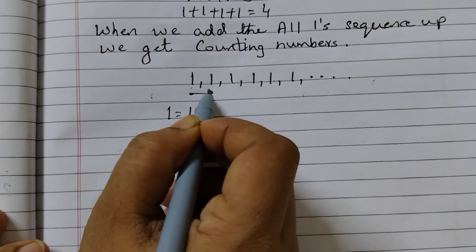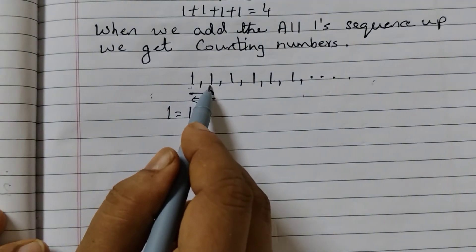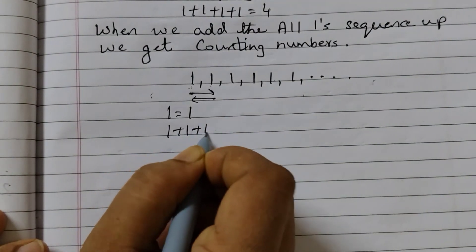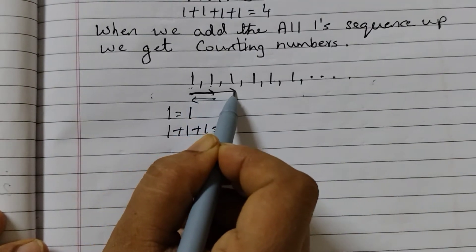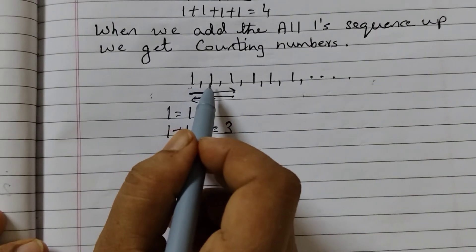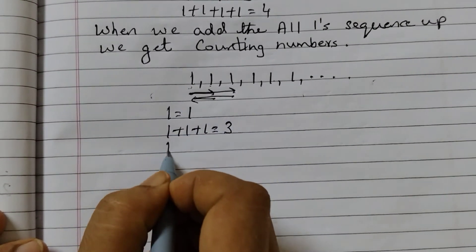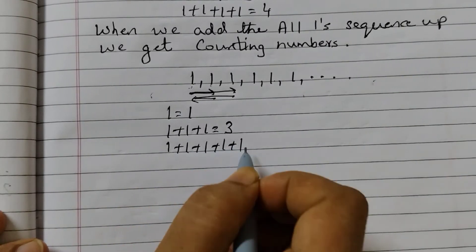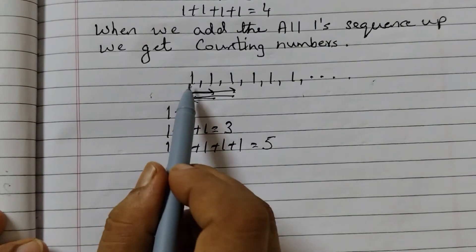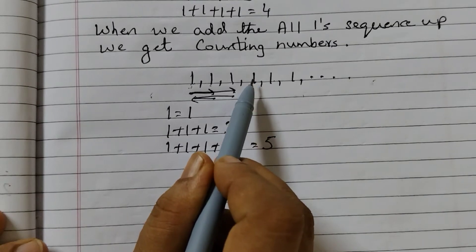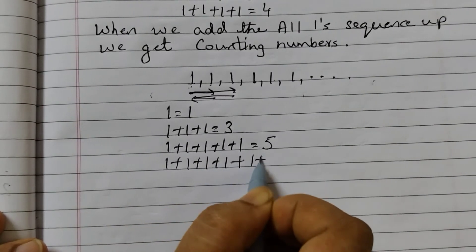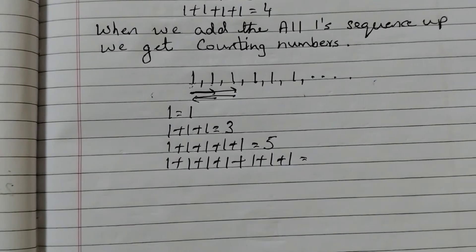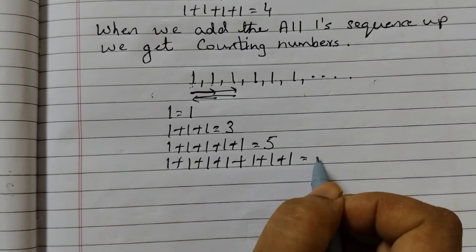Start from here, go up and then down: 1 plus 1 plus 1 equals 3. Again start from here, go up till here and then come back: 1 plus 1 plus 1 plus 1 plus 1 equals 5. Start from here, go till the fourth position and come back to the first position: 1 plus 1 plus 1 plus 1 plus 1 plus 1 plus 1 equals 7.